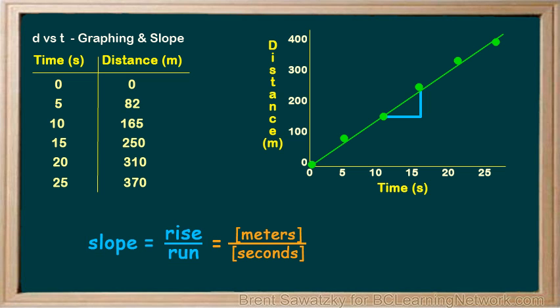Again, the rise would be the change in distance in meters. And we remember that another way of writing change in distance is delta d. In the same way, the run is the change in time. And that can be written as delta t, the change in time.